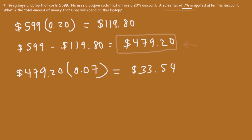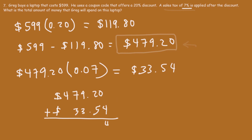Rounding the tax to the nearest cent, the price increases by $33.54. Adding the two numbers: 4 plus 0 is 4, 5 plus 2 is 7, 3 plus 9 is 12 — write the 2, carry the 1. 1 plus 7 plus 3 is 11, and 4 plus 1 is 5. So the final price is $512.74.